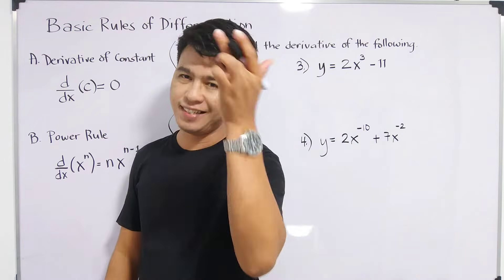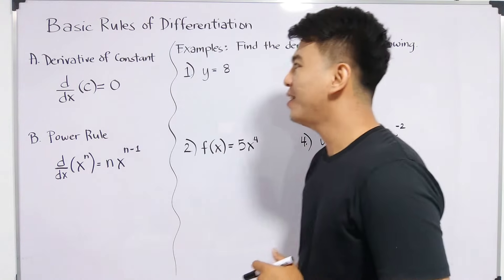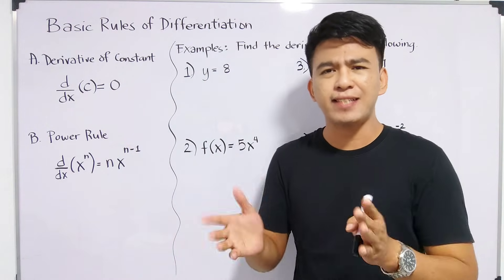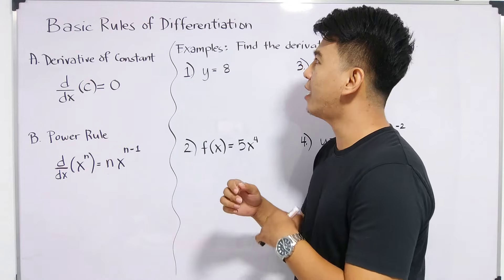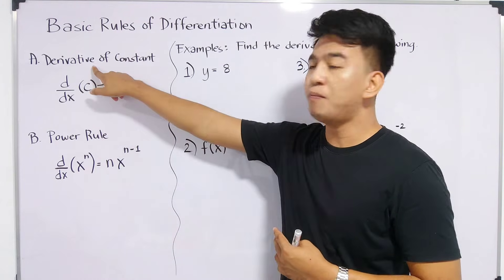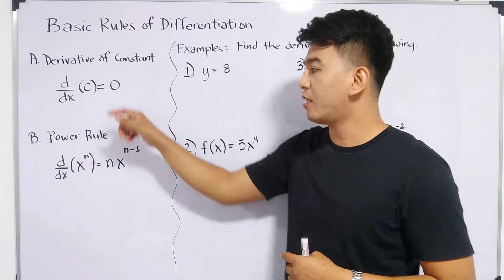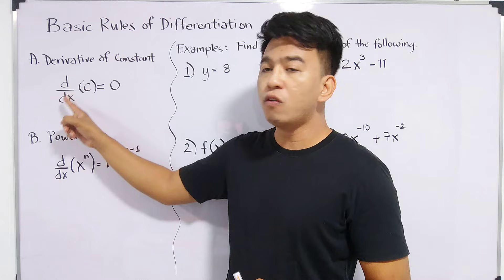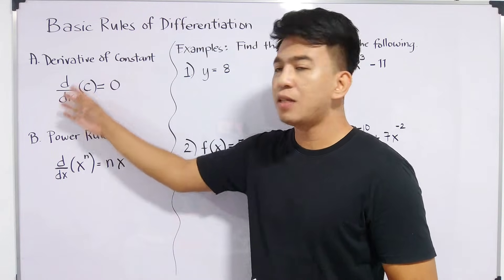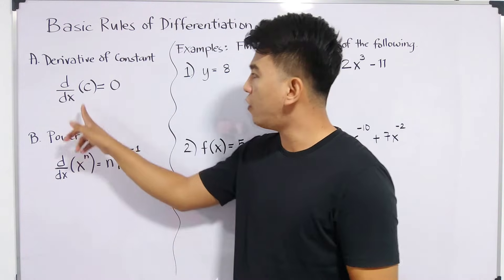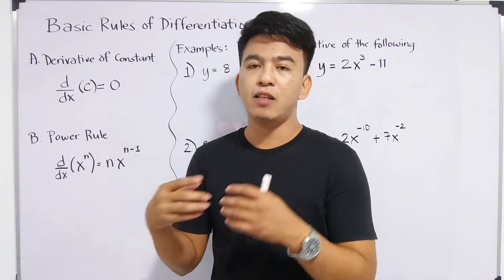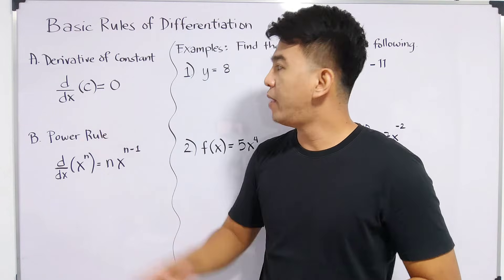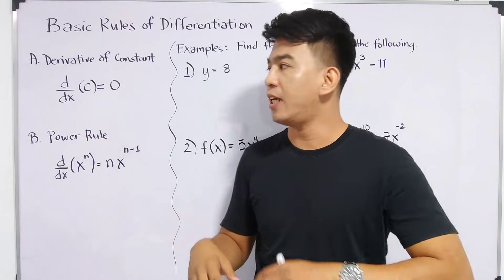So without further ado, let's do this topic. We have here the first two basic rules. These are the basics when it comes to differential calculus. First, the derivative of a constant, followed by the power rule. For the first rule, we have d over dx of c. The derivative of a constant c is only equal to zero. By the way, d over dx is an operator.